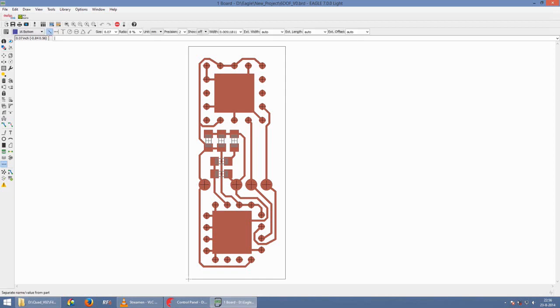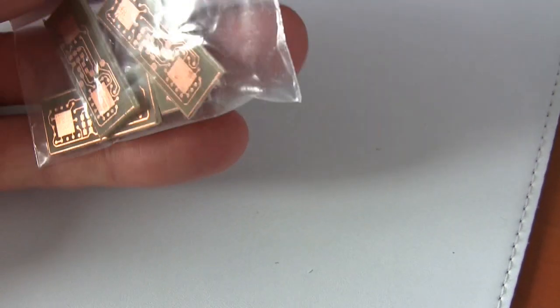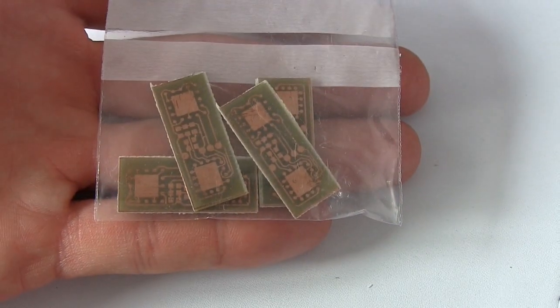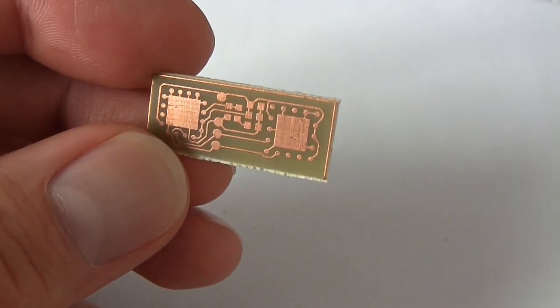By using the CAD program Eagle and the schematic in the data sheet, I made a circuit board layout. After completion I sent the layout to an etching company that made the actual board. As you could see, the size is only 12 by 30 millimeters. Here are the edge boards I ordered - several in case I mess up during soldering. I really love the quality of the etching, it's very neatly done.